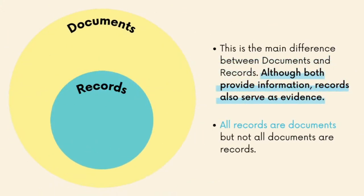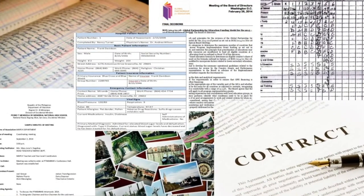This is the main difference between documents and records. Although both provide information, records also serve as evidence. With all that being said, we can say that all records are documents but not all documents are records. Many records start out as documents and then become records when they are finalized. Other examples of records include final reports, confirmatory emails, meeting reports, photographs, maps of field missions, contracts, and ledgers, which need to be kept as evidence for certain business transactions or activities.